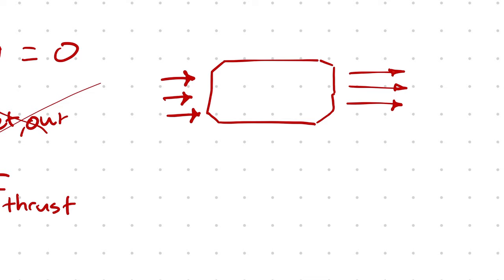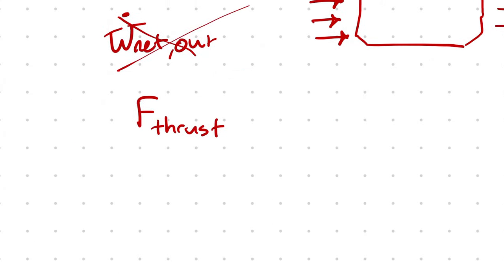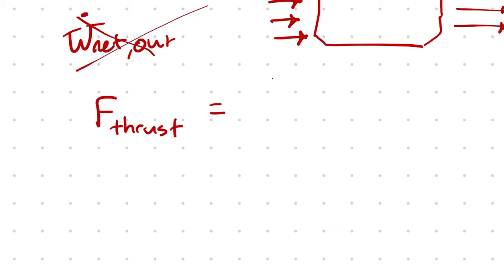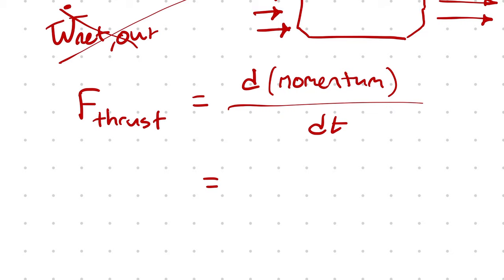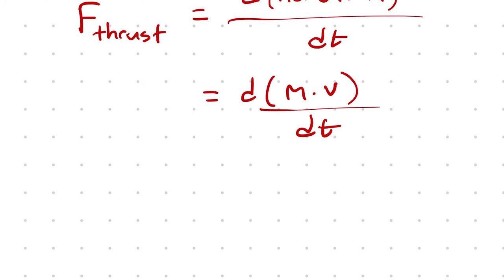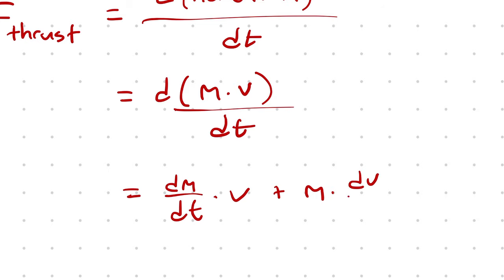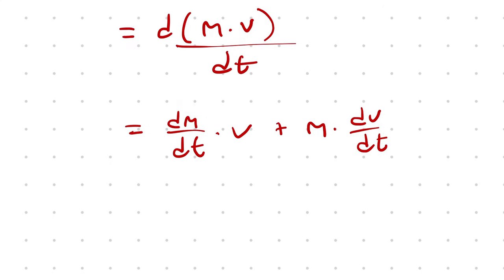Our thrust production is going to be the force at the back end of the engine minus the force on the front of the engine. Furthermore, since we are assuming the engine is at a constant velocity, we can neglect one of our force terms. Remember that we define force as the derivative of momentum with respect to time, and momentum is mass times velocity, which from the product rule we can write as dm/dt times v, plus m times dv/dt.